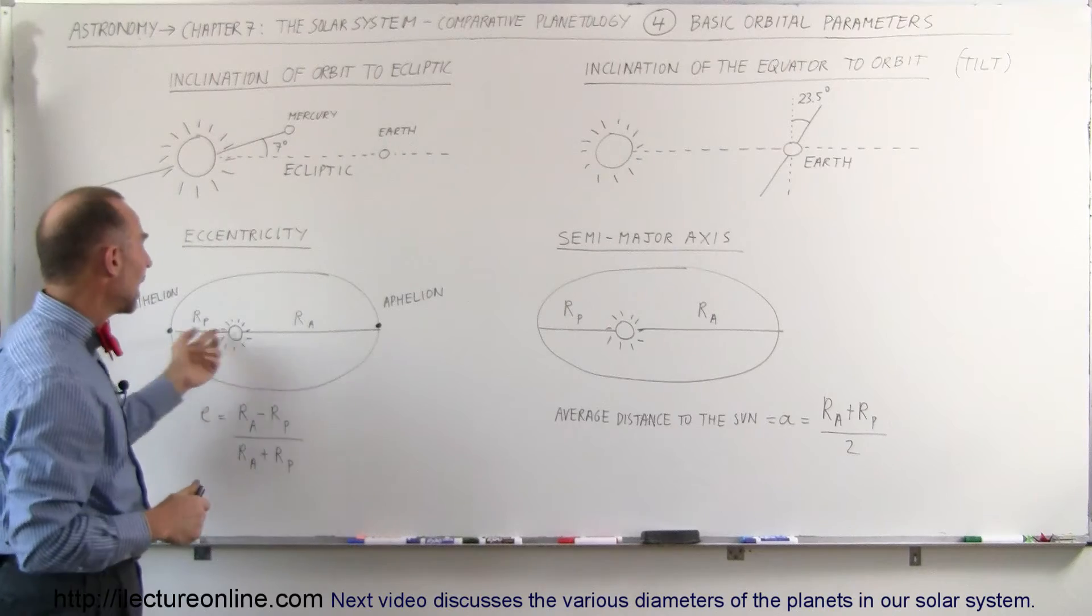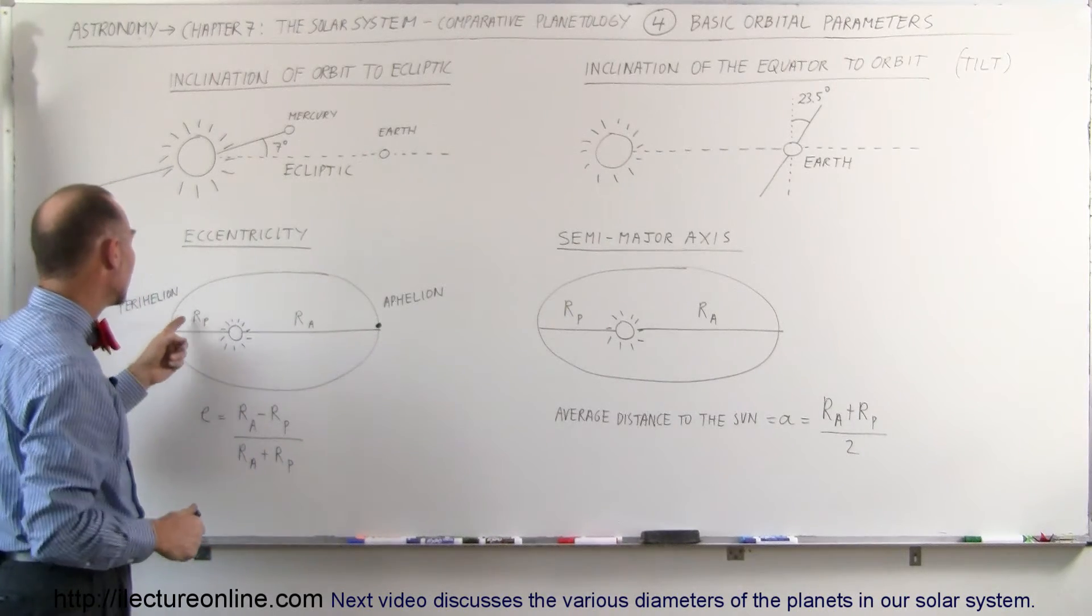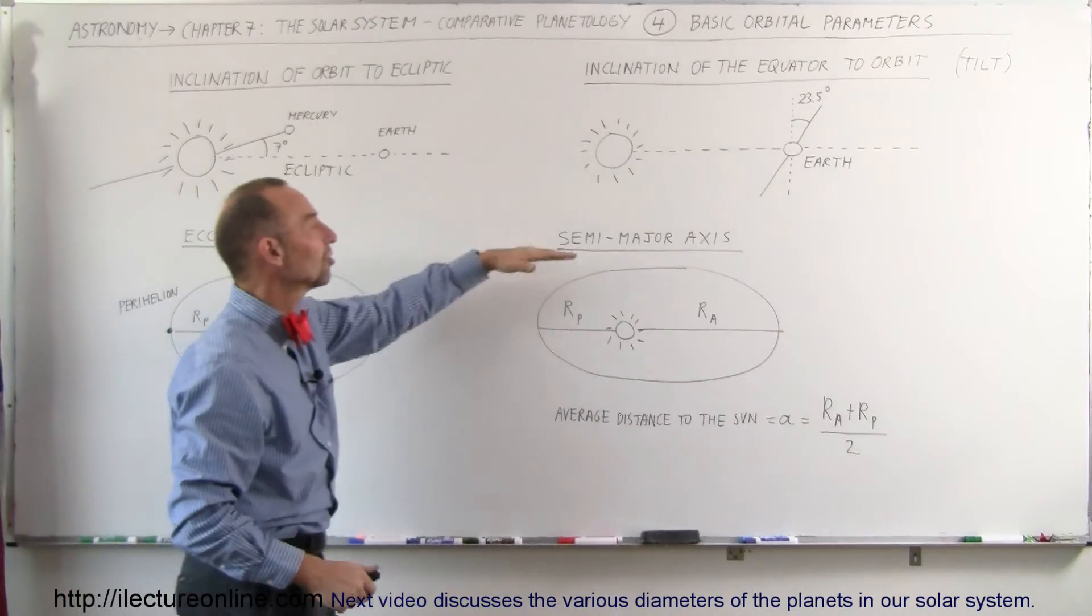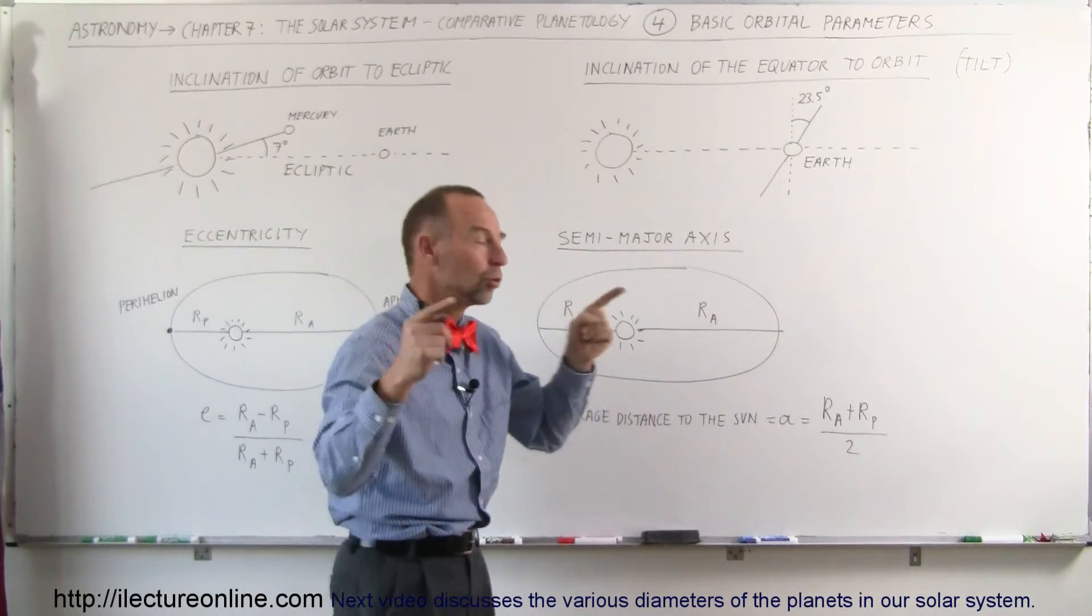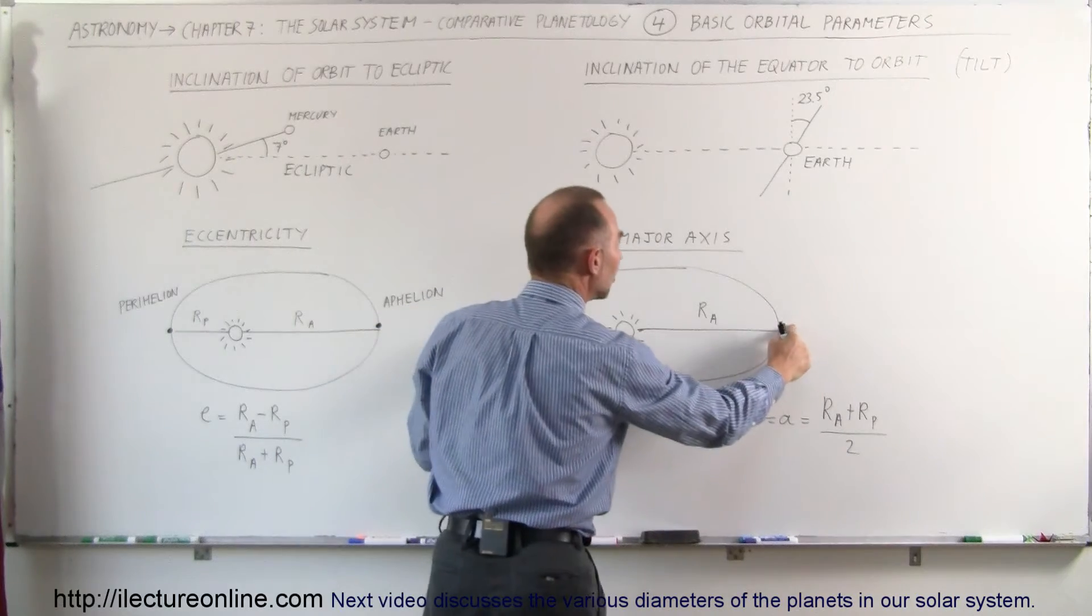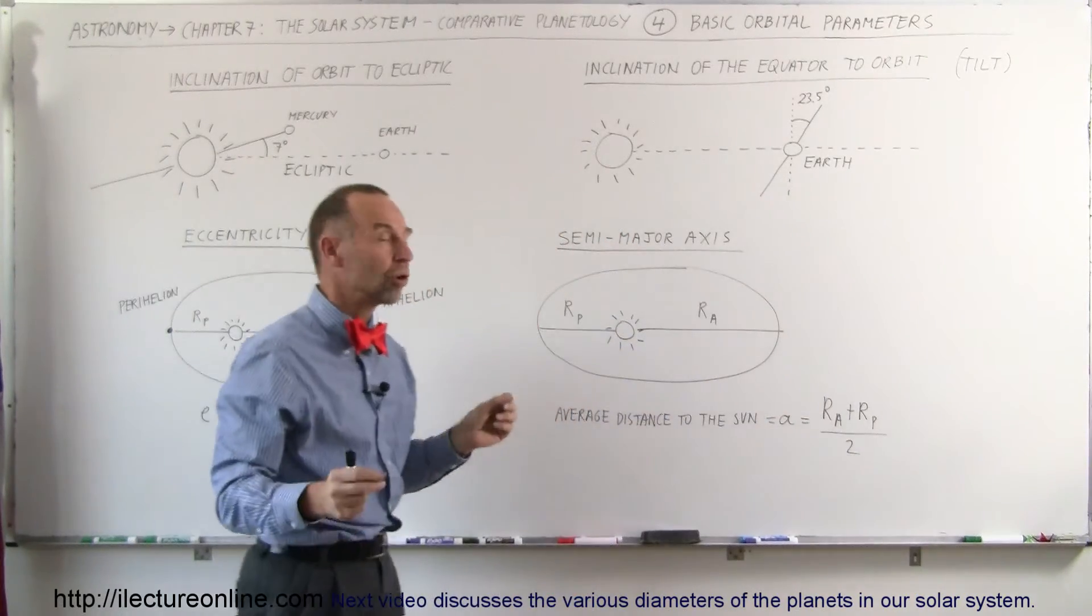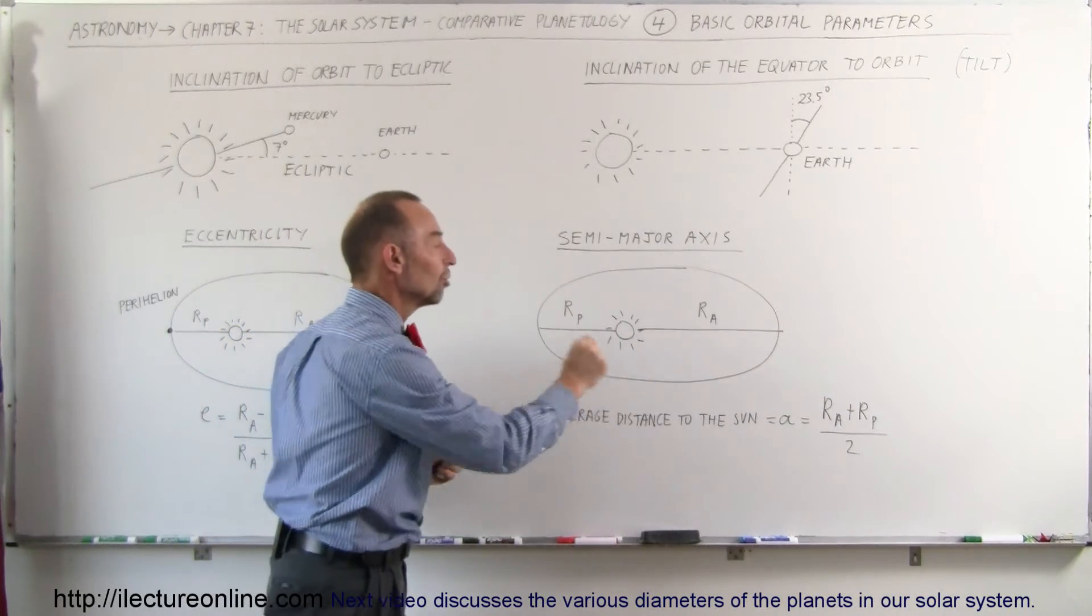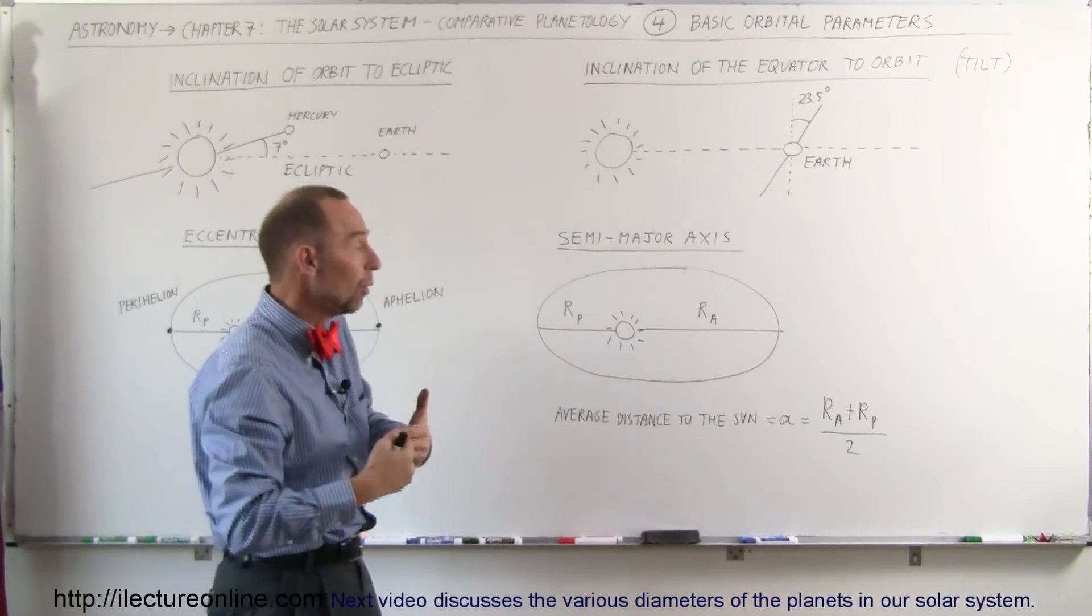Notice that if you add up the two distances, the distance to the perihelion and the distance to the aphelion, you have what we call the semi-major axis. That's the total distance across this ellipse from the one end to the other end where it's most elongated. That's called the semi-major axis, and half that distance is the average distance to the Sun from the planet.